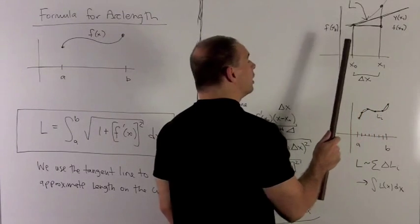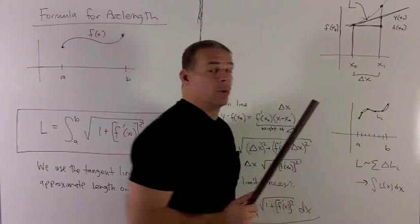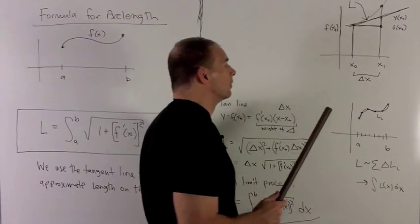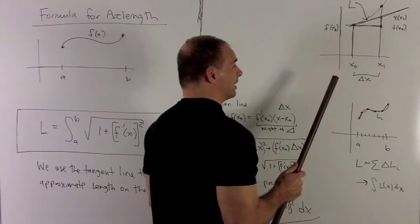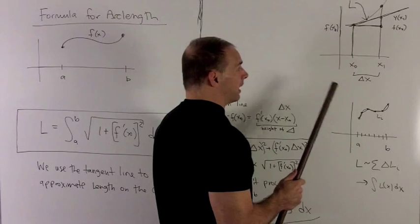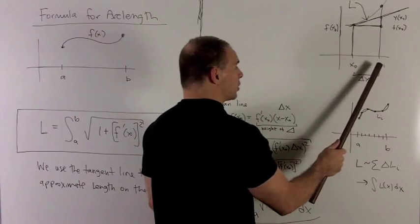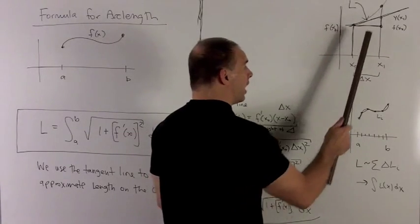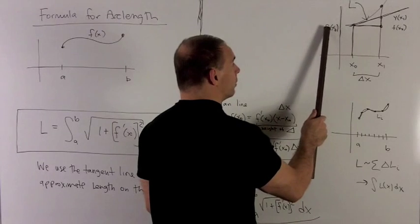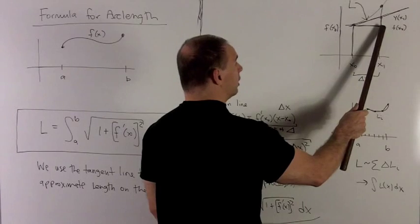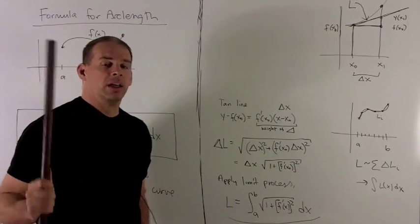We're interested in the right triangle here, so I need to know what this point is — that's going to be y of x1, which I'll get from the equation of the tangent line. We want to know how to get L, the length of the hypotenuse, and using the Pythagorean theorem we can get that if we have the base and the height. The base is just x1 minus x0, which I'll call delta x. The height is the difference of y of x1 — the tangent line evaluated at x1 — and f of x0.